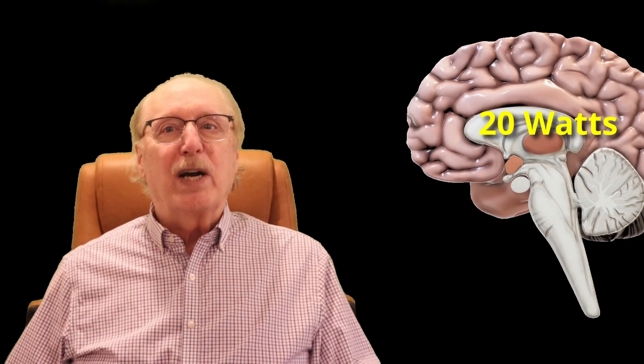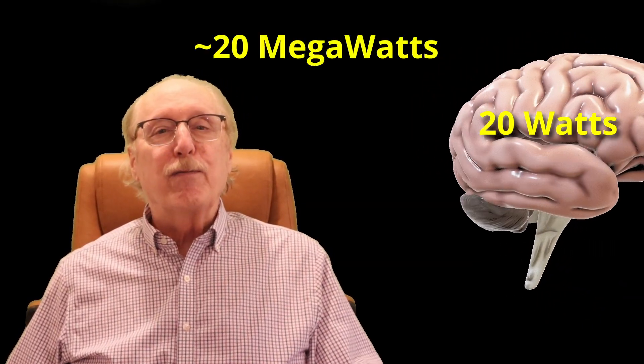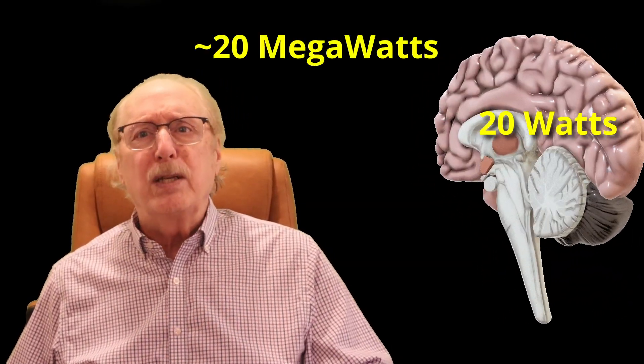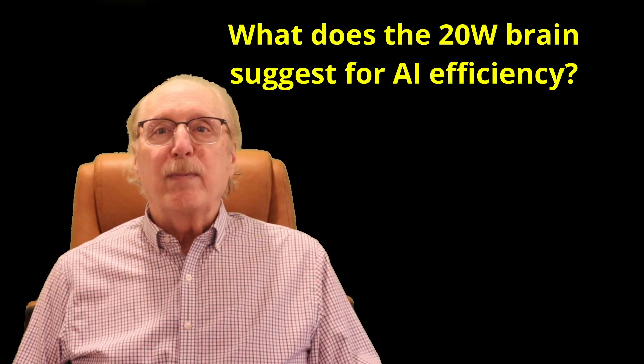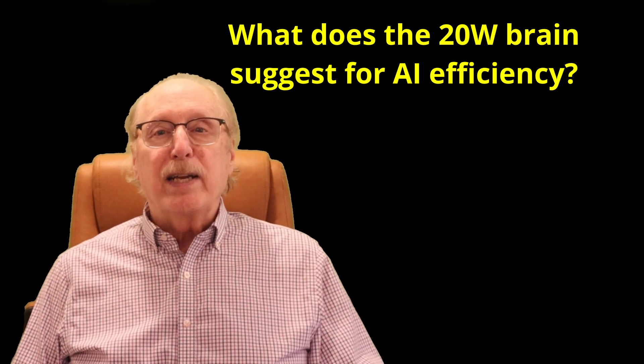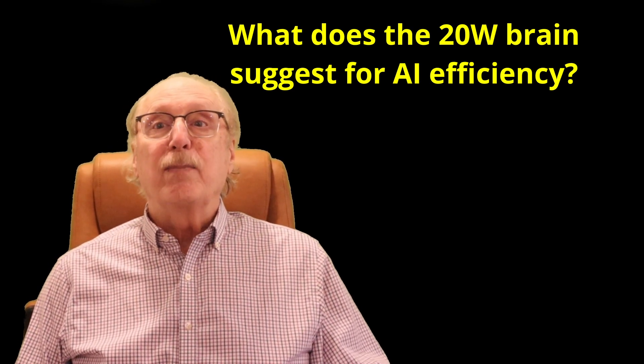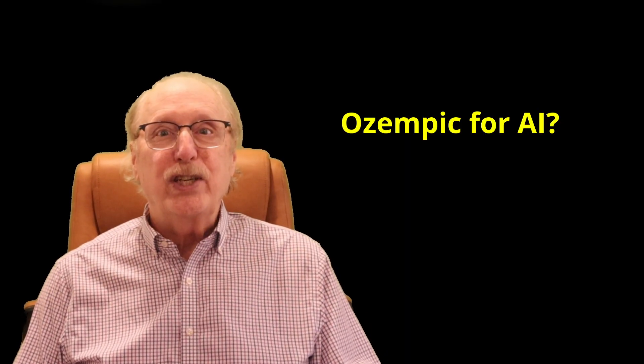Your brain uses only 20 watts of energy while an AI server farm might use a million times more. How do we account for this huge difference? And what can learning about the human brain and its graph-like information structure tell us about how to slow AI's voracious energy appetite?